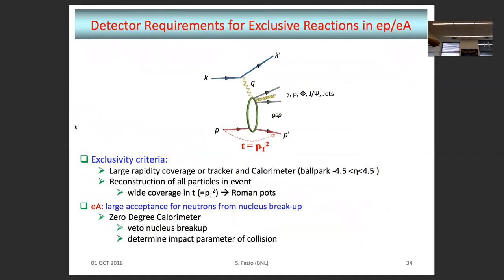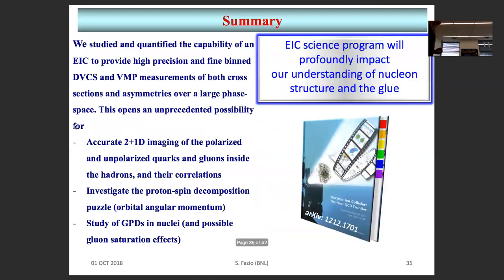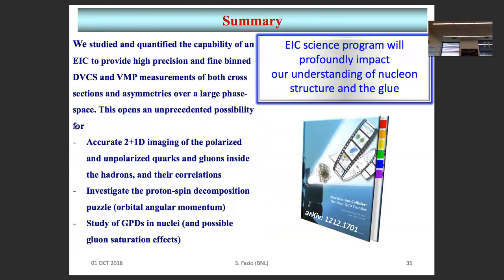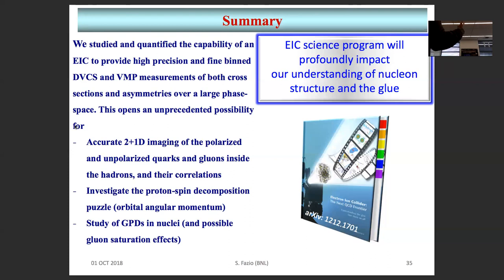For detector requirements: you want something hermetic, covering pseudorapidity roughly between −4.5 and 5, with equal coverage of tracker and electromagnetic calorimetry, a forward proton spectrometer, and zero-degree calorimetry. To cross-check using the rapidity gap method you need good hadronic calorimetry in the forward region plus high-resolution tracking. The time is now mature to redo the DVCS impact studies properly — perhaps with full-chain simulation and including mesons — and this is also a challenge for theorists to develop a global NLO fit framework combining DVCS and mesons.